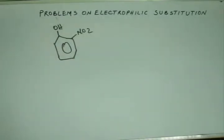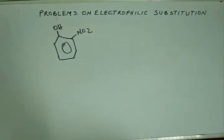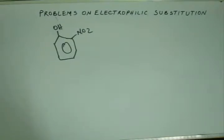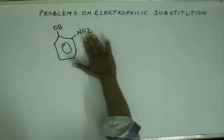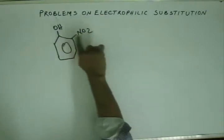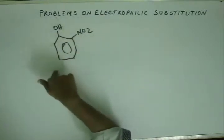Ortho Nitro Phenol is an important, very common compound. If you want to get Ortho Nitro Phenol from Benzene, the first thing is you get Phenol, because you can't get Nitro group directly on Benzene. You can't get Nitrobenzene and then try to add OH, because Nitro group is Meta Directing. If you bring the Nitro group first, then OH cannot go to Ortho — it will go to Meta.